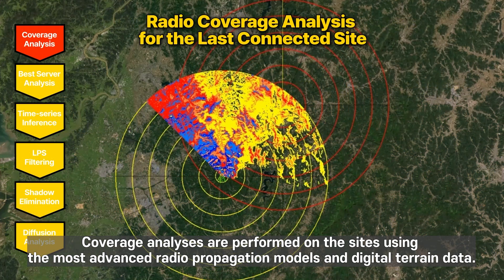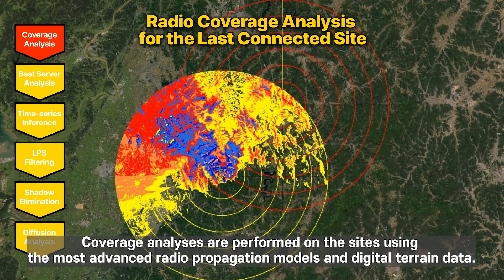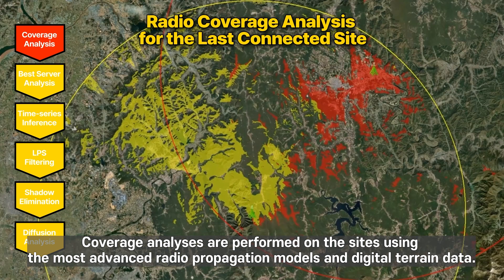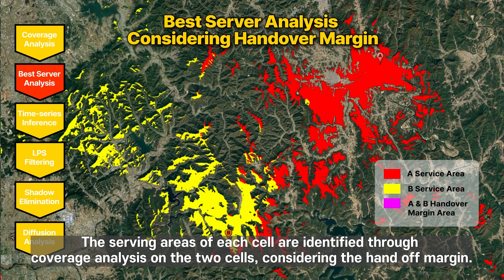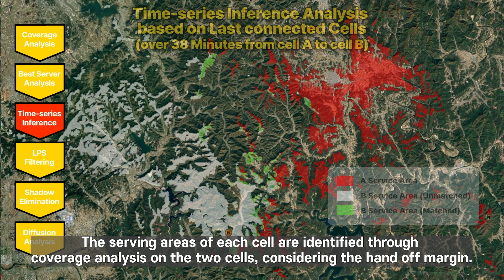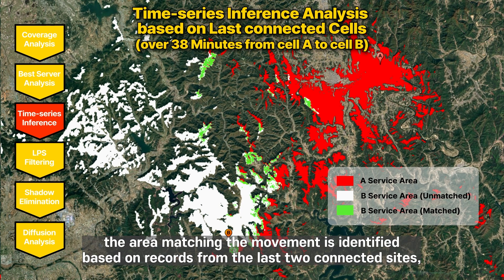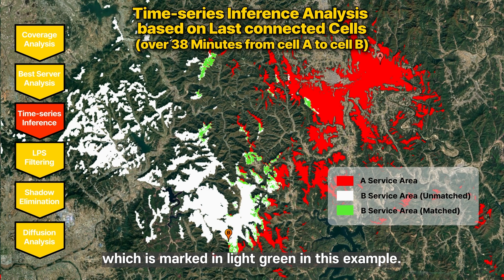Coverage analyses are performed on the sites using the most advanced radio propagation models and digital terrain data. The serving areas of each cell are identified through coverage analysis on the two cells, considering the handoff margin. Through the inference analysis, considering the missing person's mobility characteristics, the area matching the movement is identified based on records from the last two connected sites, which is marked in light green in this example.